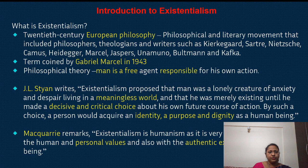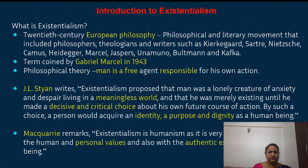Existentialism is a 20th century European philosophy — a philosophical and literary movement that included philosophers, theologians, and writers such as Kierkegaard, Sartre, Nietzsche, Camus, Heidegger, Marcel, Beauvoir, and Kafka. The term existentialism was coined by Gabriel Marcel in 1943. Existentialism deals with man and his existence, holding that man is a free agent responsible for his own actions.